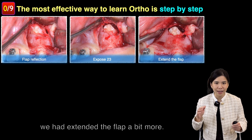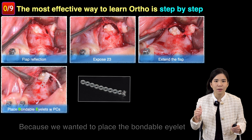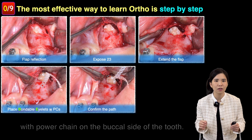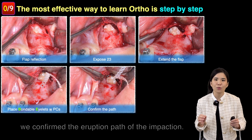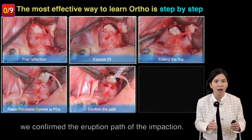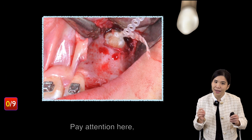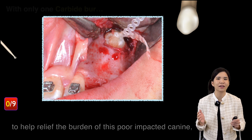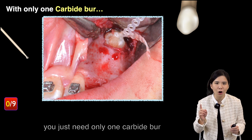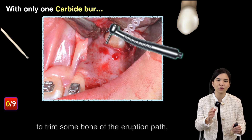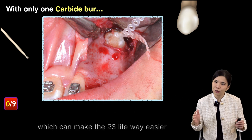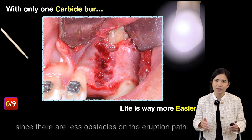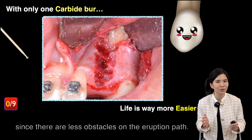Next, we extended the flap a bit more in order to place the bondable eyelet with power chain on the buccal side of the tooth. Once attached, we confirmed the eruption path of the impaction. To help relieve the burden on this impacted canine, you only need one carbide bur to trim some bone along the eruption path, which makes eruption easier and faster with fewer obstacles.